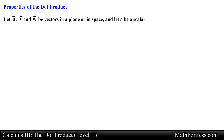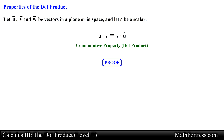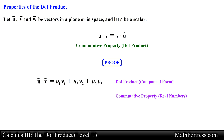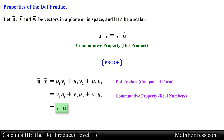Let's talk about the properties of the dot product. Let u, v, and w be vectors in a plane or in space and let c be a scalar. The first property is u dot v equals v dot u — the commutative property. To prove it, we define u and v in component form, apply the component definition of the dot product, then use the commutative property of multiplication for real numbers to rearrange the terms, yielding v dot u.